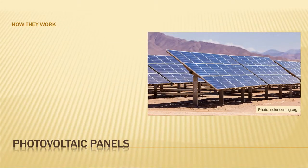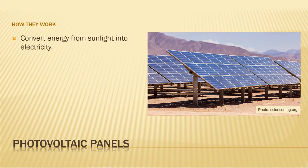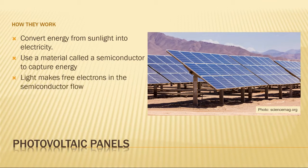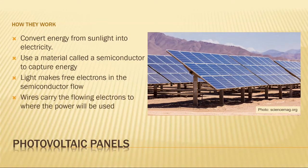Photovoltaic panels convert the sun's light directly into electricity. They do this using materials called semiconductors, which sometimes act like conductors and sometimes act like insulators depending on a given condition — in this case, the presence of sunlight. Light makes free electrons in the semiconductors start to flow, and metal contact strips carry the flowing electrons out of the solar cell, where it is converted from DC electricity into AC electricity and usually stored in batteries for later use.